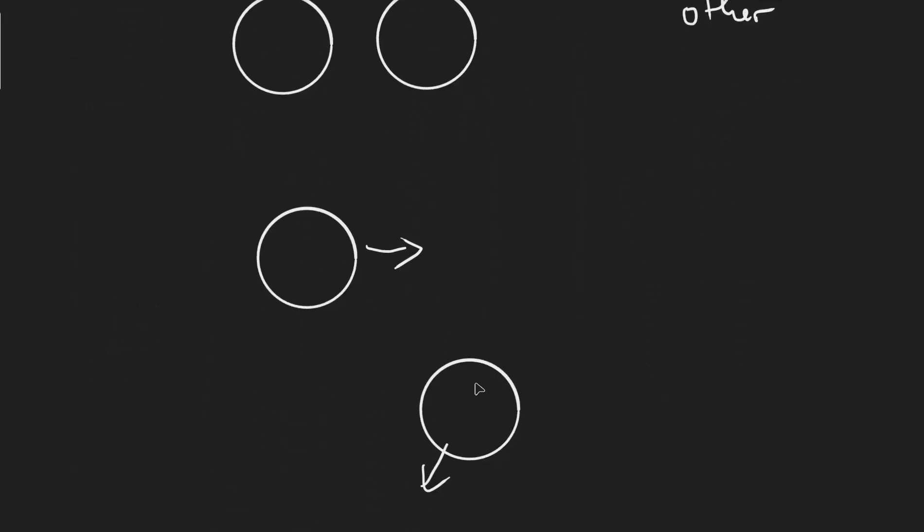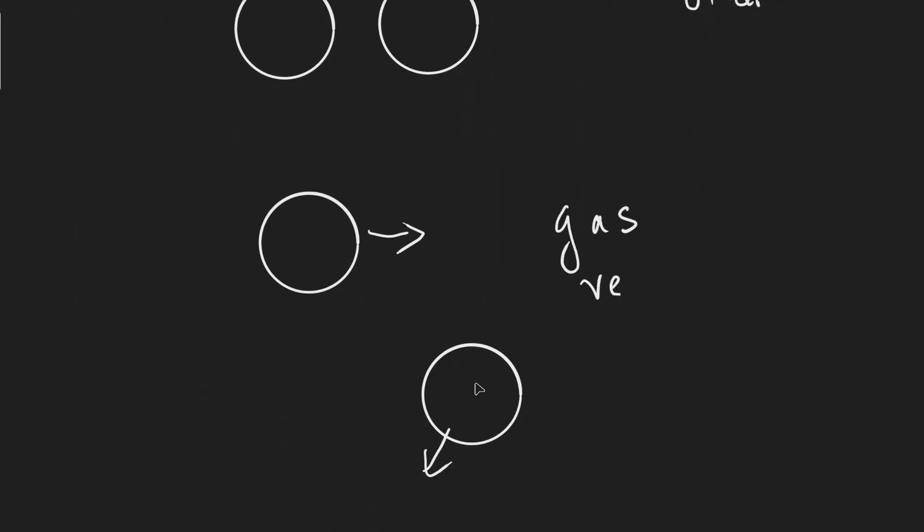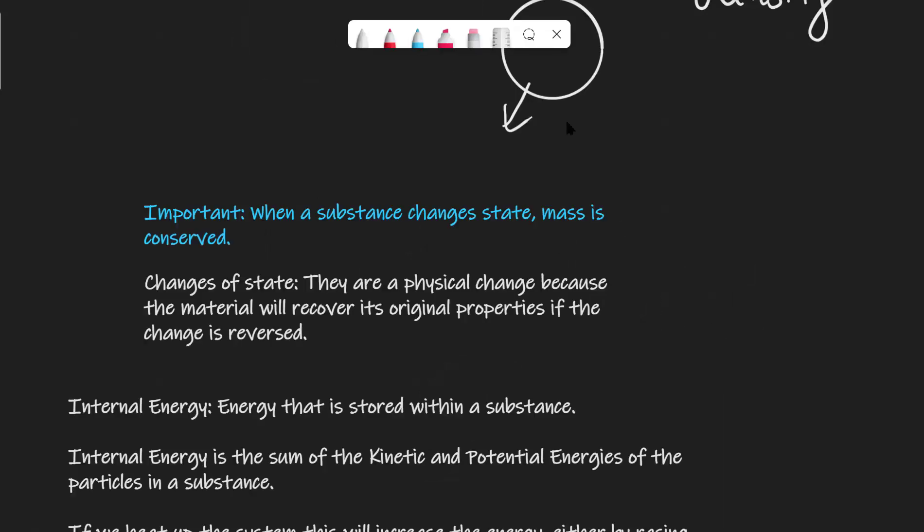The final state that we're going to be considering is that of a gas, which has a very low density, and there's very few particles which are hardly interacting at all, moving at random speeds. It's really important to mention that when a substance changes state, the mass is conserved. For instance, if I had something like 1 kilogram of ice, once this is melted, it should produce 1 kilogram of water. In reality, there might be some evaporation here and there, but overall, the mass is conserved.